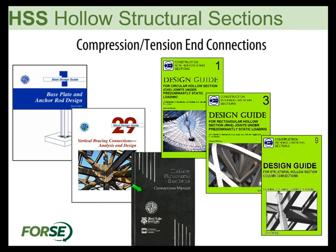If you can get a hold of one — and the only place I've found one is on eBay, Amazon, or a used book site — the Hollow Structural Section Connections Manual from the 1990s is worth referencing. Part of what Design Guide 24 from AISC and the Steel Tube Institute design manuals are about is updating the information in that book and presenting it in an available format.